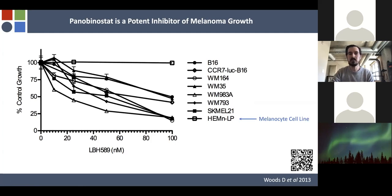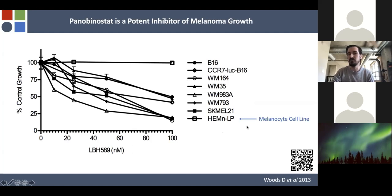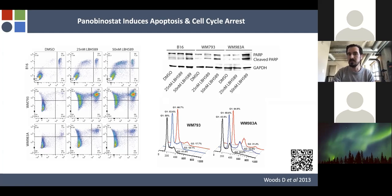Focusing on panobinostat across a larger group of melanoma cell lines with different mutational statuses, low nanomolar doses inhibited cell growth similarly. Most interesting to me was that when we used a non-transformed melanocyte cell line, it really didn't impact viability or cell counts. So panobinostat seems to be selective for transformed cells.